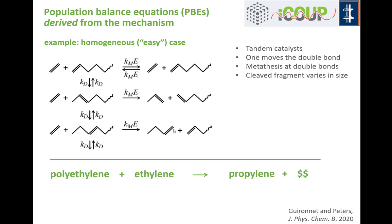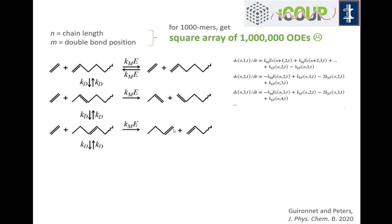A lot of depolymerization proposals result in a whole bunch of different products, but this one basically converts polyethylene and excess ethylene into propylene — a value-added product — and should in principle be the only product from this cascade of reactions. This would be a great system to model.